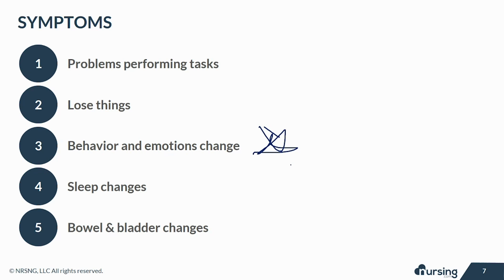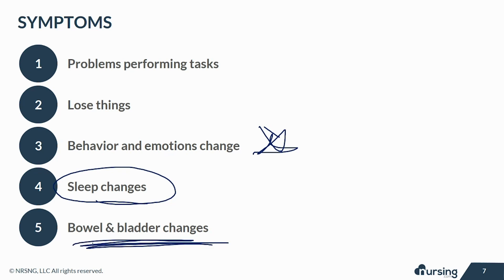I'd be angry or depressed too if I woke up one morning and couldn't remember how to put my clothes on. Alzheimer's patients' sleep habits usually change, sometimes very drastically, because they don't really have a concept of time. Eventually, they'll lose control of their bowel and bladder as well. Essentially, what we're seeing with Alzheimer's disease is a regression to infancy when you really think about it.